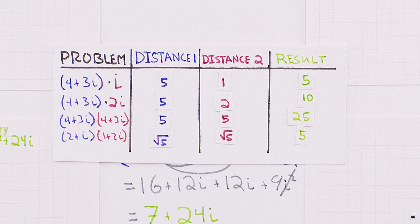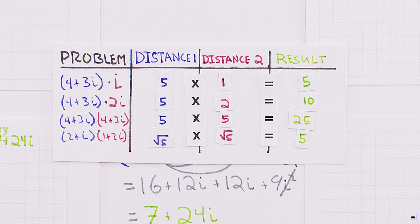After some more pondering, we see that if we multiply our distances, we obtain the distance from the origin of the result.